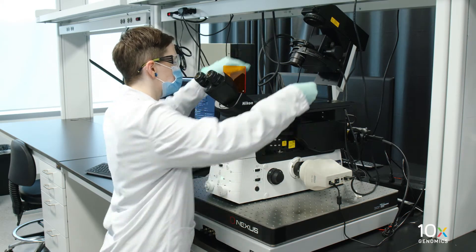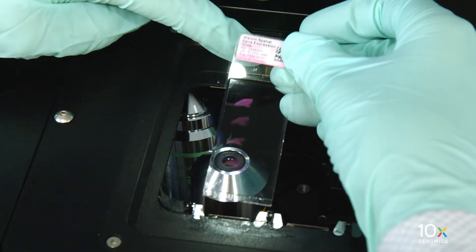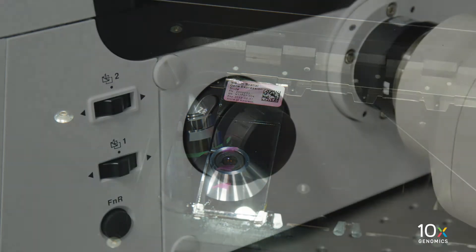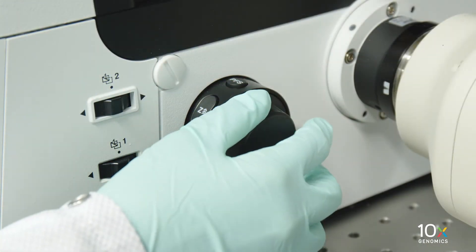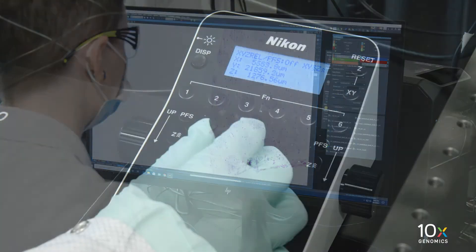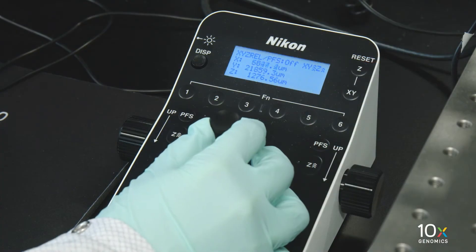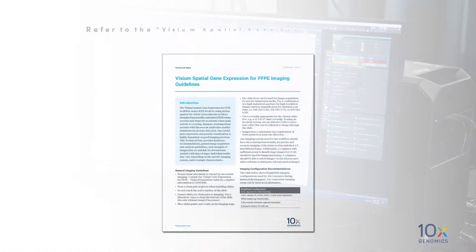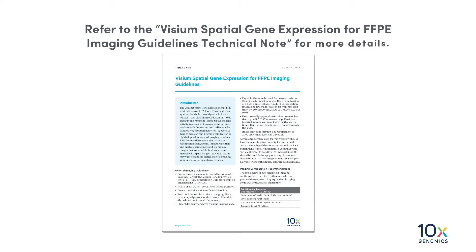Place the cover slipped slide on the microscope stage. Ensure that the image is in focus and the scanning area is defined. Refer to the Visium spatial gene expression for FFPE imaging guidelines technical note for more details.